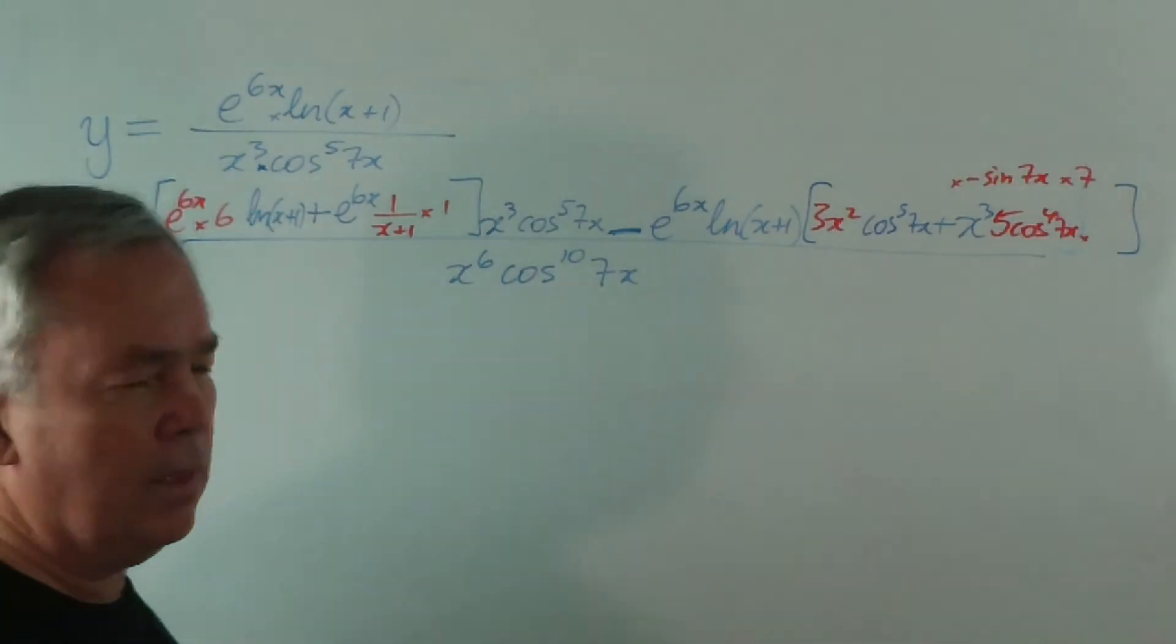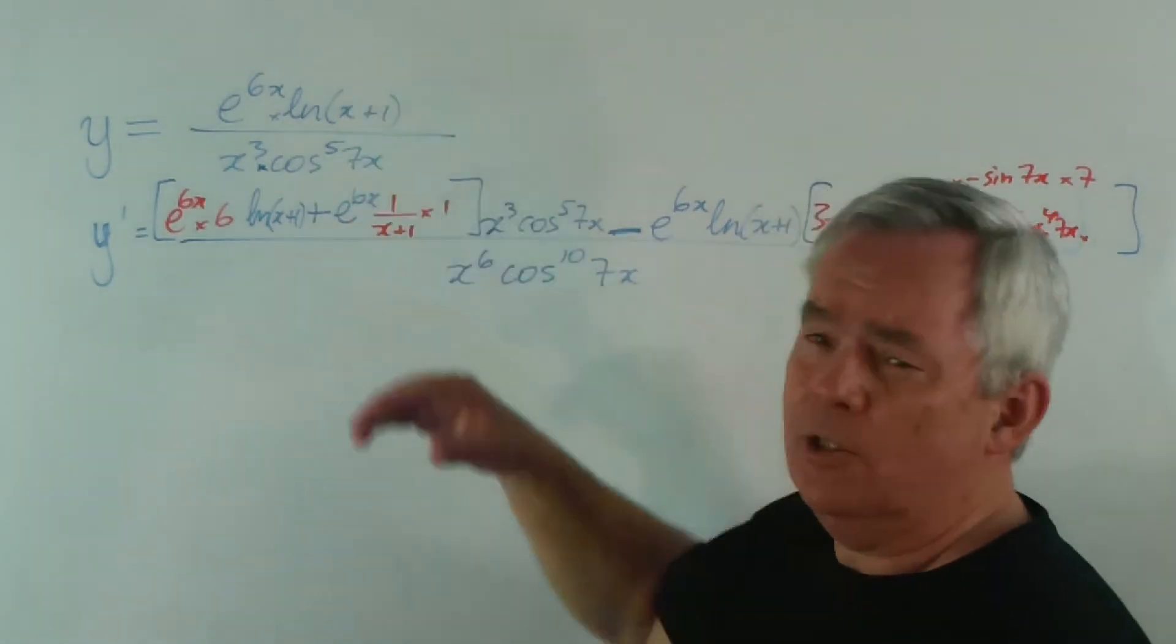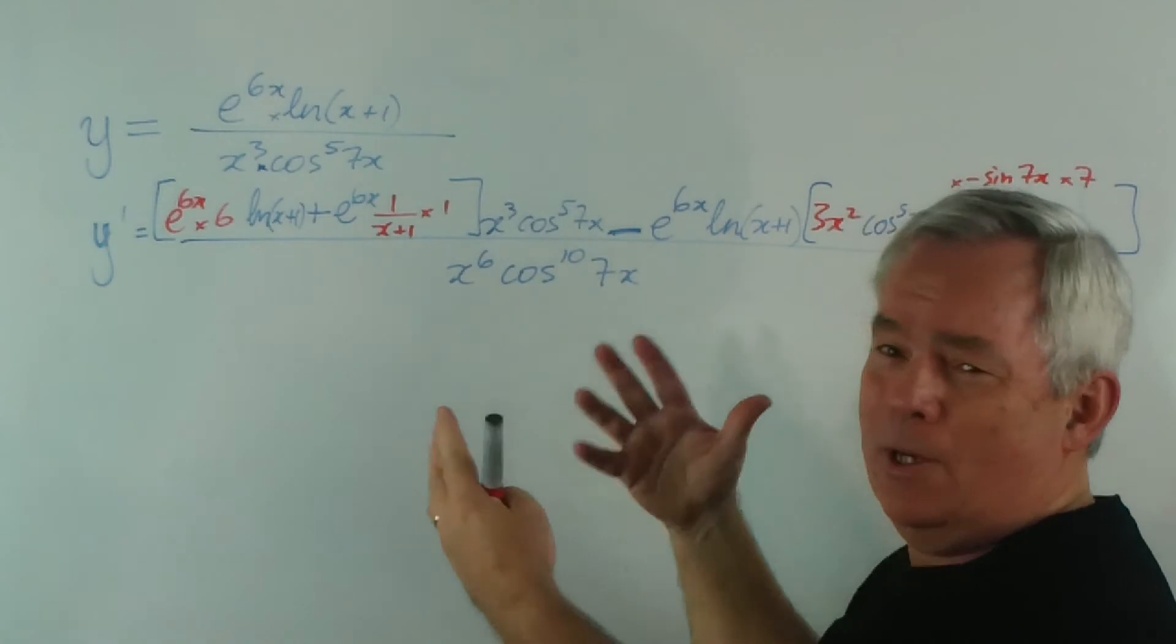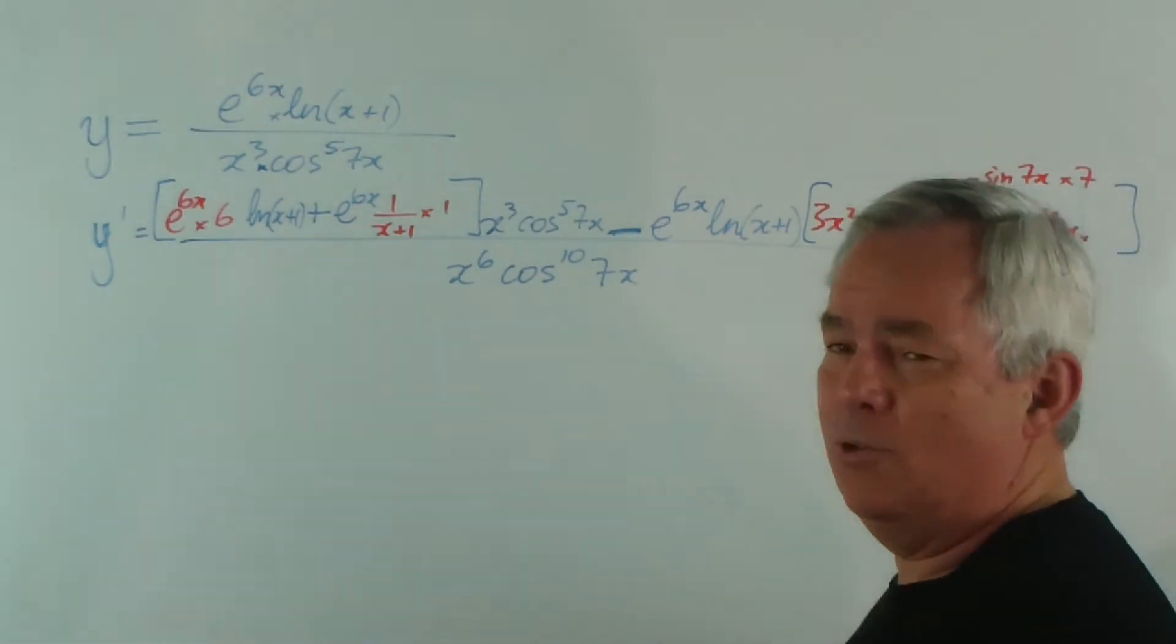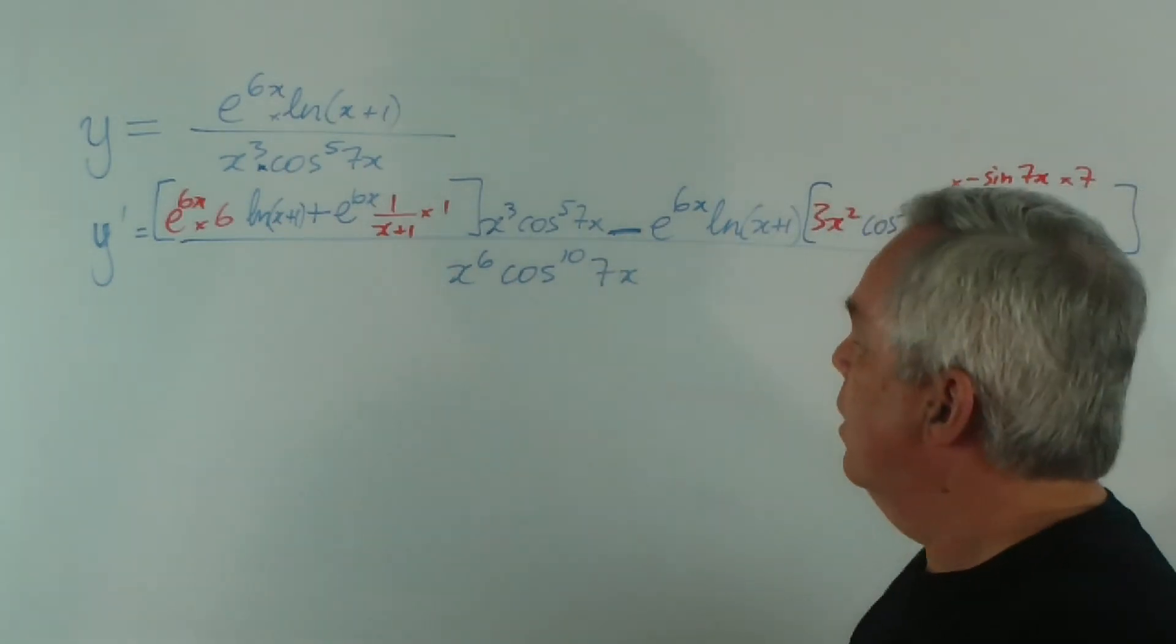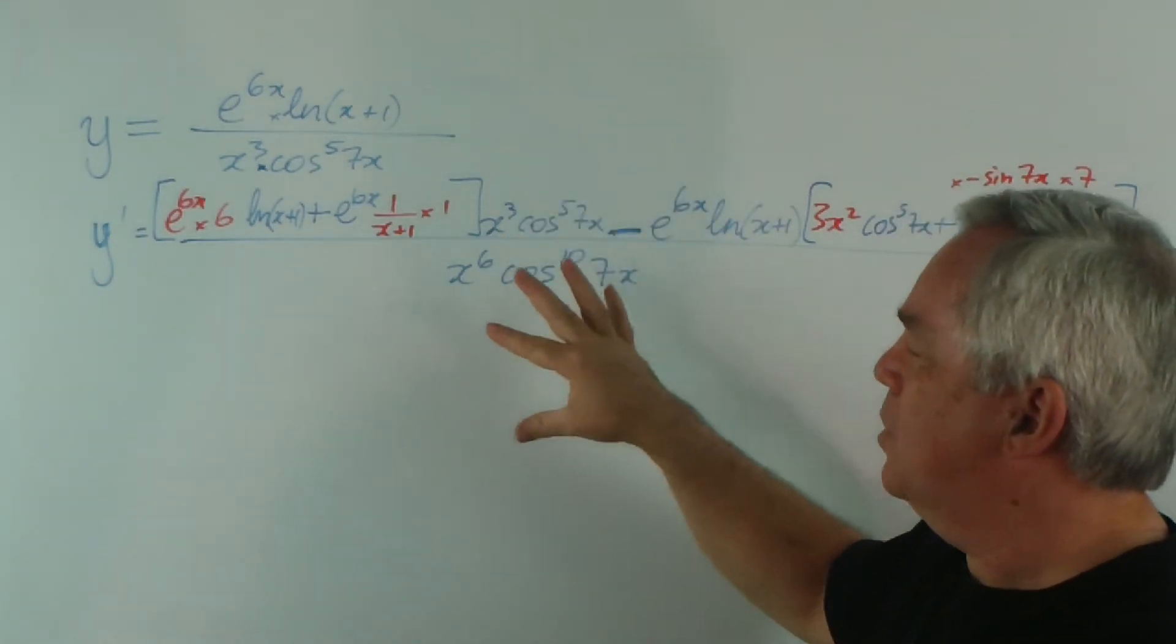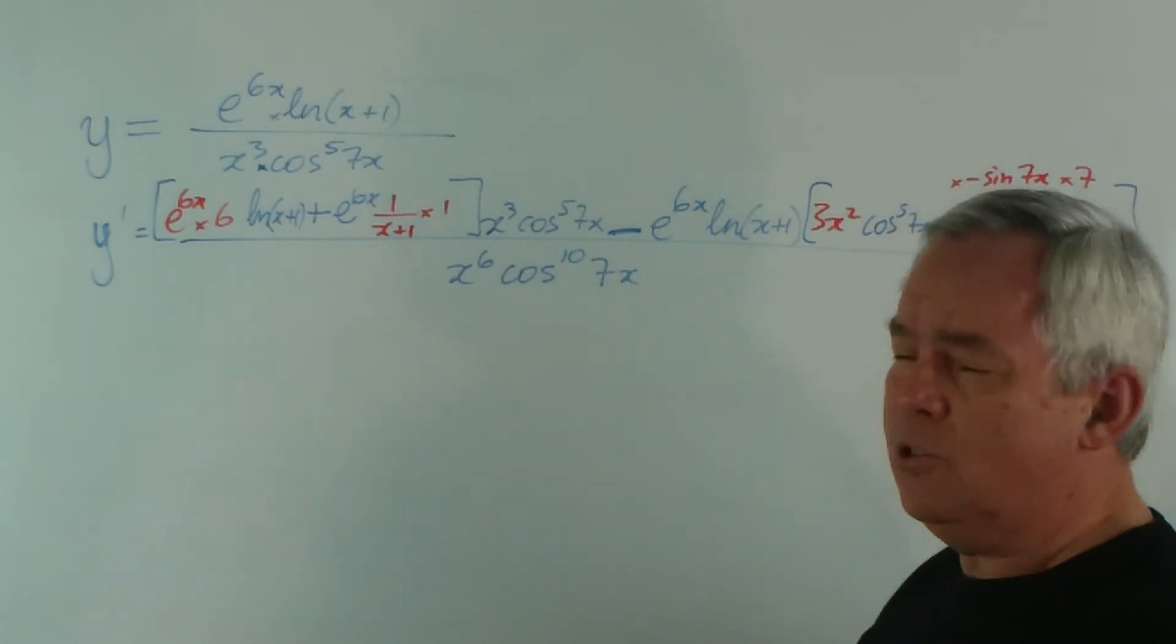And there it is, in one line we've completed the derivative of that compound function. Now, of course, this is quite a horrific example, and you would have a substantial amount of sorting out to do algebraically, but, in fact, the derivative has been found. And I want you to learn to use this structure so that, with simpler examples, you can find derivatives very, very quickly indeed. Let's do one more.